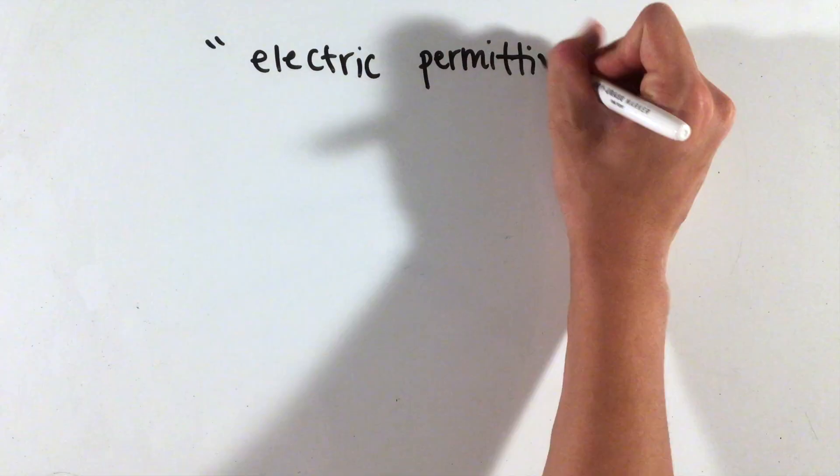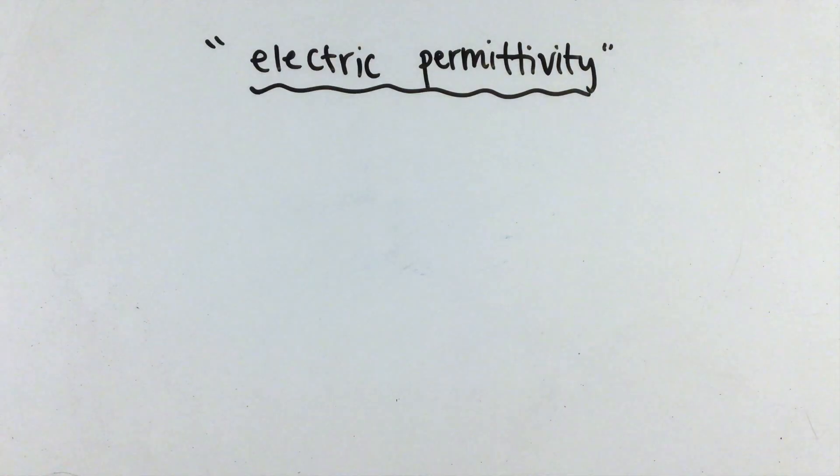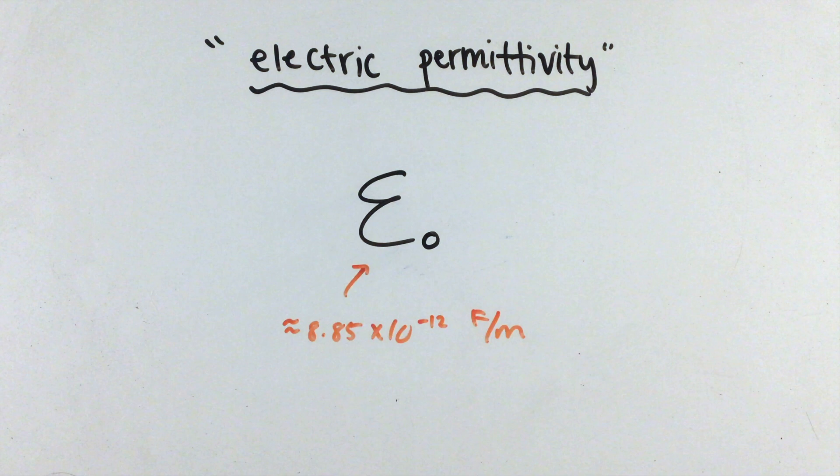Now, one property related to the electric polarizability of a substance that we didn't touch on in AP Physics 1 is known as electric permittivity, symbolized by the Greek letter epsilon. The only value we'll need to know for AP Physics 2 is called the permittivity of free space, but this value will be on your equation sheet.